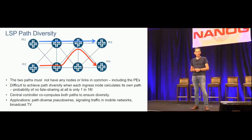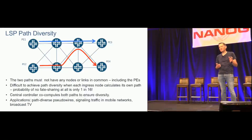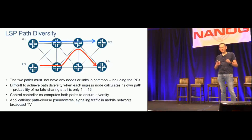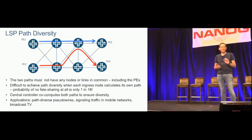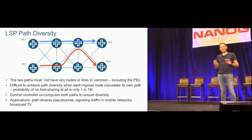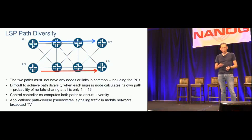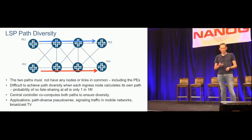For a diverse path computation, if you ask the two ingress routers PE1 and PE2 to compute independently, there's no protocol mechanism for them to collaborate on diversity. With lots of ECMP paths in the network there's only a one-in-sixteen chance they'll actually be diverse — fifteen times out of sixteen they'll share fate, as shown where they have a node in common in the middle of the network, violating the path diversity requirement. In contrast, if you tell the controller you want a diverse pair of LSPs with these ingress and egress routers, it does the computation simultaneously bearing diversity requirements in mind, and you get proper diversity — exactly what the service requires.